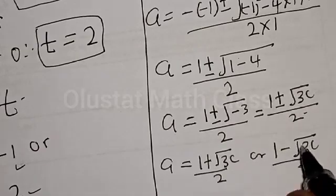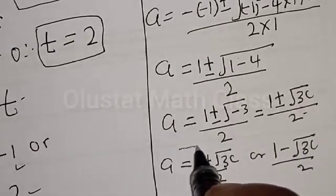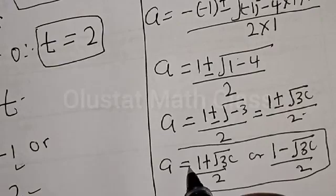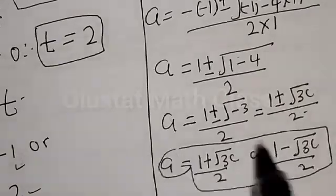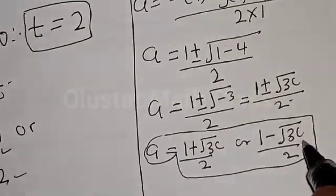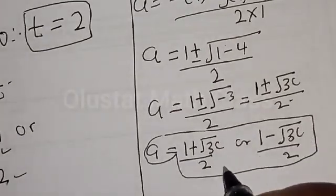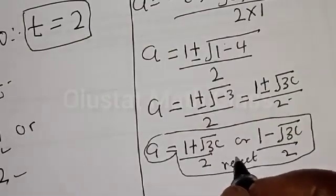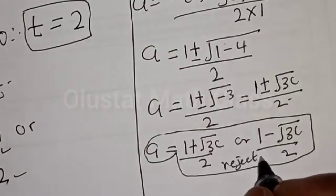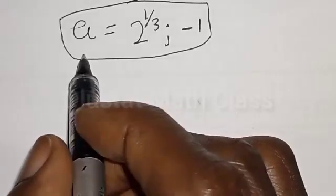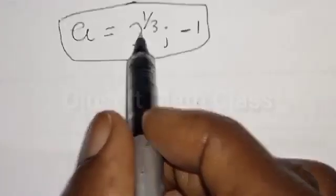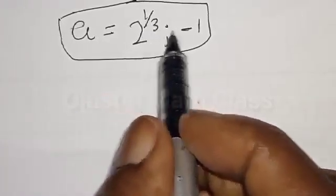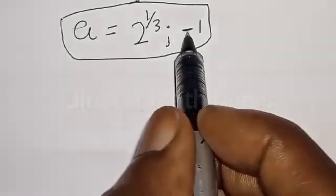We get A equals 1 plus or minus square root of minus 3, divided by 2. We cannot make use of this because this is a complex solution, so we reject it. Our final answers are A equals 2 raised to power 1 over 3, and A equals minus 1.